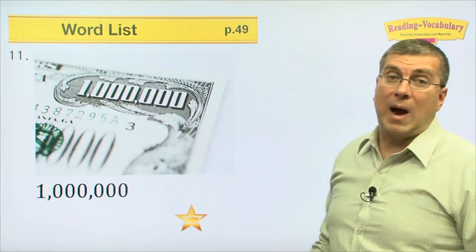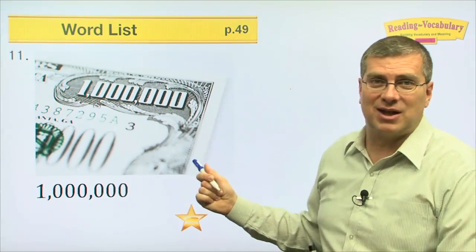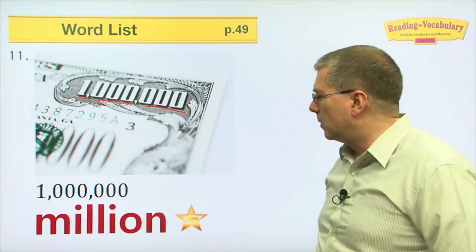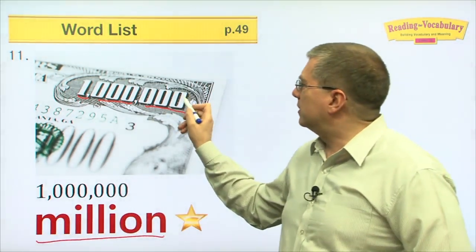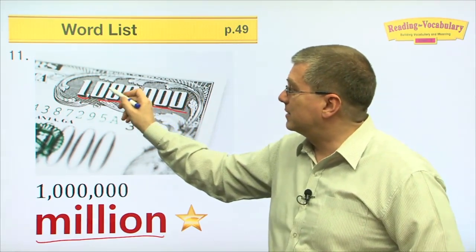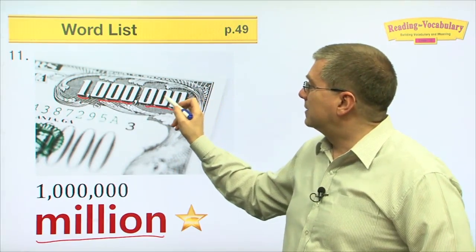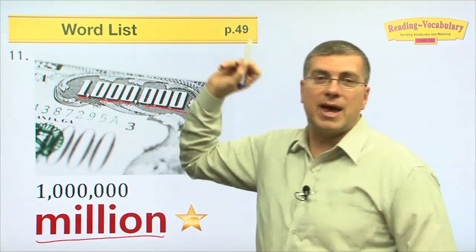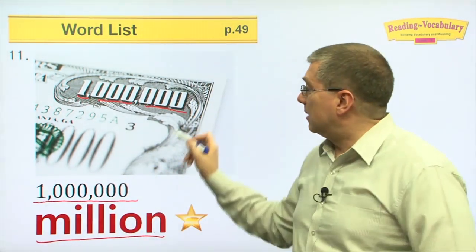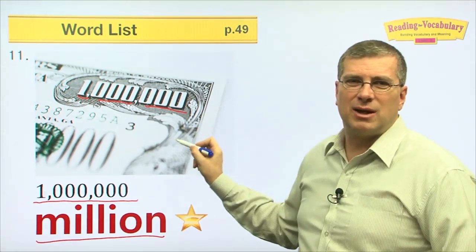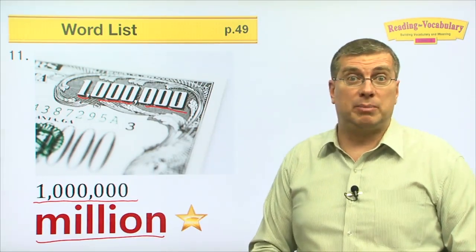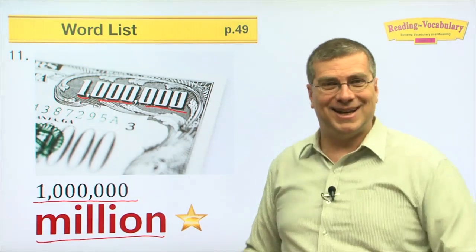Number eleven — wow, that's a lot of money. Here we have 1,000,000. What number do we call it? We call it million. In English, we put three zeros, comma, three zeros, comma, and then 1 — that's 1,000,000. I don't think there's a real 1,000,000 dollar bill. Can you imagine going to a store and paying a million dollars for milk? Do you have change? That's crazy.